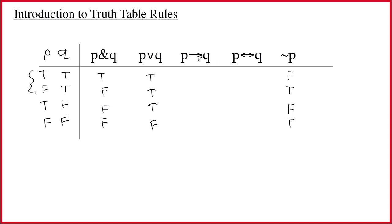The double arrow has some unintuitive properties, but let's just get the rule out. A good way to think about the double arrow is as a correlation between the parts — specifically, a correlation between the truth values. If both parts are true, the double arrow is true because the parts are correlated. If the parts are different, the double arrow is false. And if they're both false, the values are still correlated, so the double arrow is true. Simply: if the values are the same, the double arrow is true; if they're different, it's false.